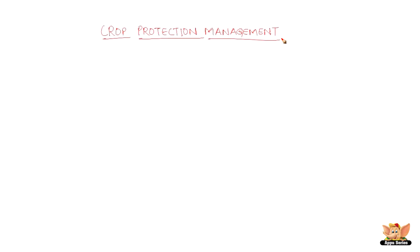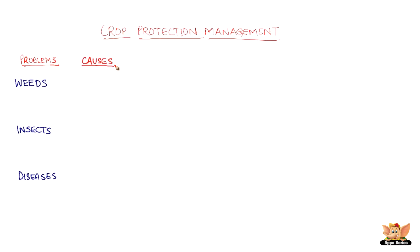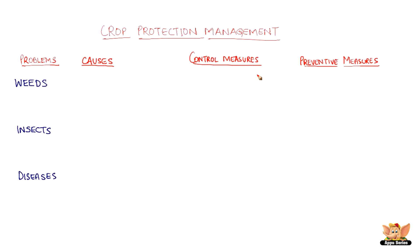Crop Protection Management. Crop protection management helps in protecting the crops from weeds, insects or diseases. Causes are identified for each. Preventive measures are taken before any attack and control measures are taken after. Let's see how this is done.